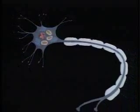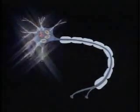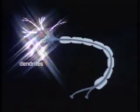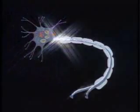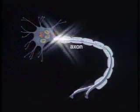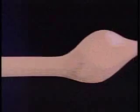These fibers are often wrapped with a fatty substance called myelin. Fibers that carry impulses toward the neuron body are called dendrites; fibers that carry impulses away are called axons. Different structures are concentrated in different parts of the body.